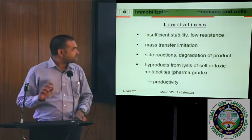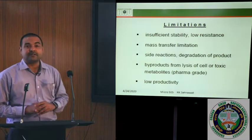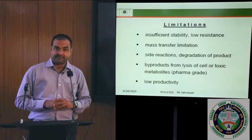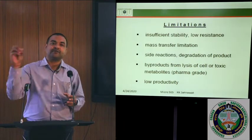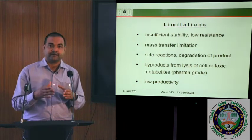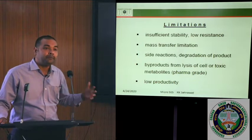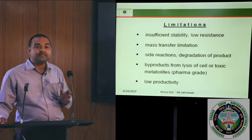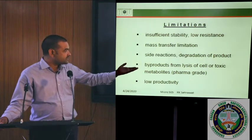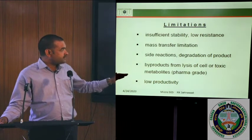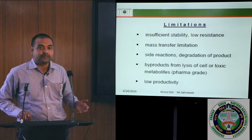The limitations of whole cell immobilization are insufficient stability and low resistance, then mass transfer limitation — heat or energy produced during the bioprocess is not transferred naturally due to restricted movement confined to a particular carrier. Few side reactions also increase; the product formed may be degraded by whole cells producing different enzymes. There are also byproducts from lysis of cells, and there are chances that secondary metabolites including toxins can be produced, hampering pharma-grade product quality. In most cases, low productivity is there, although it can be reused.